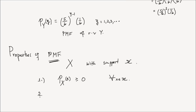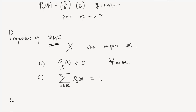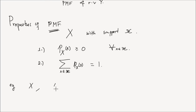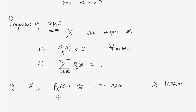The second property that a PMF should satisfy is that the sum over all values in the support of the probability mass function P of x of little x should be equal to 1. Let's say we have a random variable x with PMF given by P of x of little x equal to x divided by 10, for x equals 1, 2, 3, or 4. The support here, script x, is the set containing 1, 2, 3, or 4.